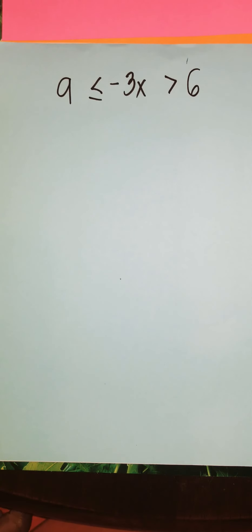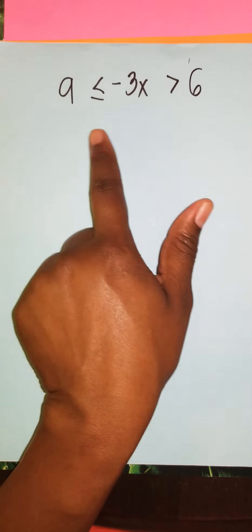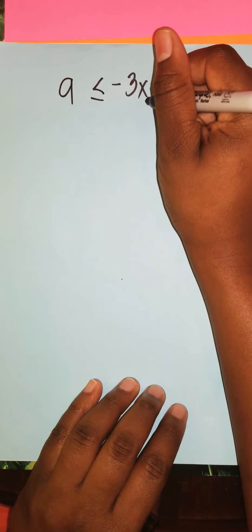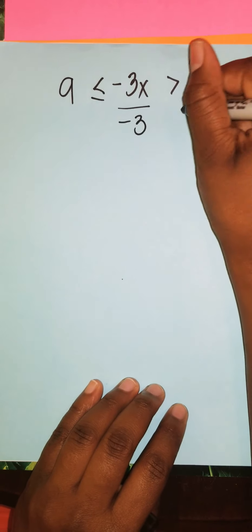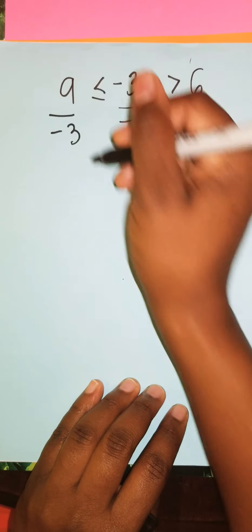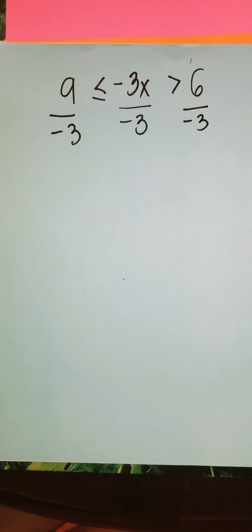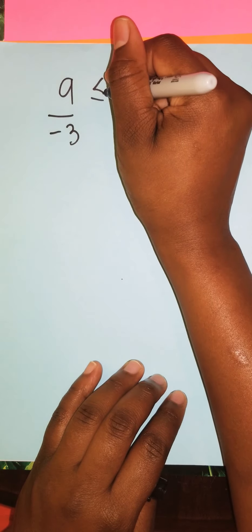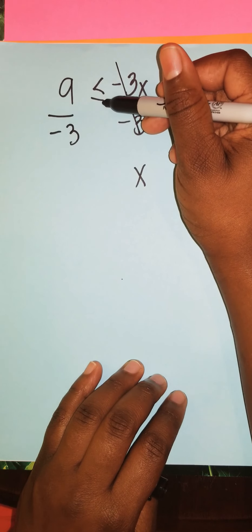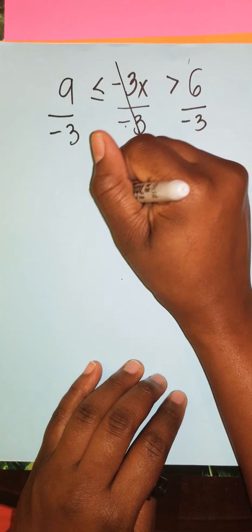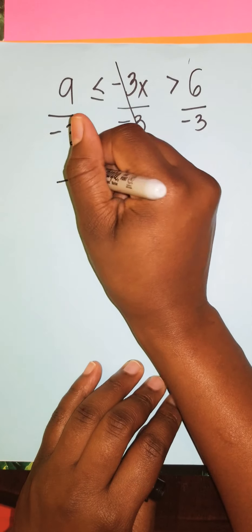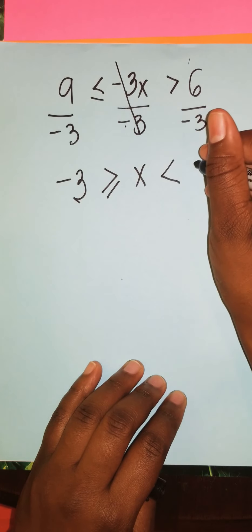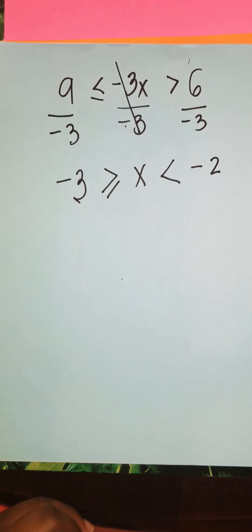So let's put a second example right here. In this case, we have 9 is less than or equal to negative 3x which is greater than 6. Here we have a negative coefficient, so we have to divide by the negative number throughout the inequality. Remember, when we divide or multiply by a negative number, the sign changes. So that cancels, so x—this is no longer greater than or equal to, it's going to be less than or equal to. That's going to be negative 3. On this side, this will no longer be greater than, it will now be less than, and I'm going to give us negative 2.